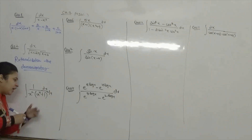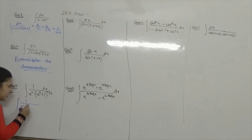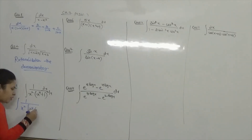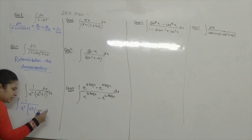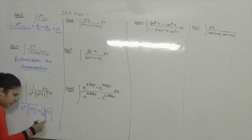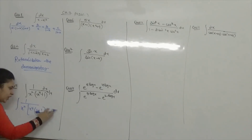Remember that — what will we do? We will take x to the power 4, Common. This is 3 times 4. Now, what will happen in the 4th?